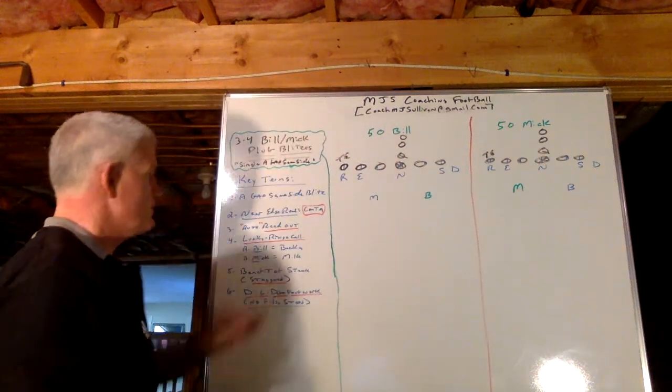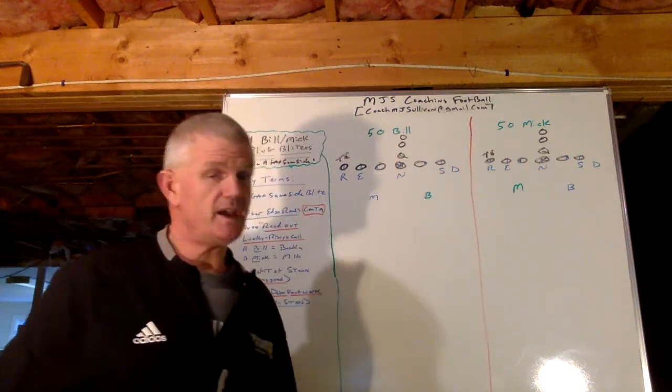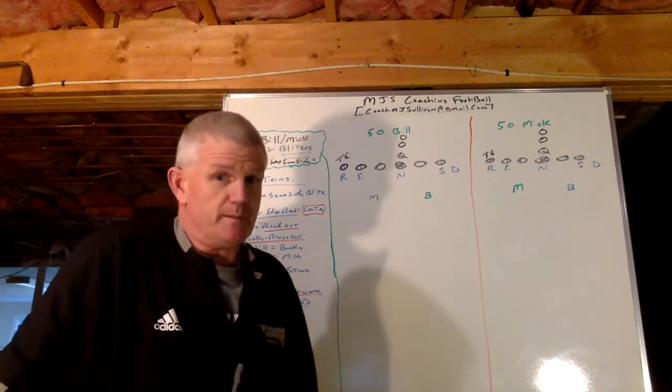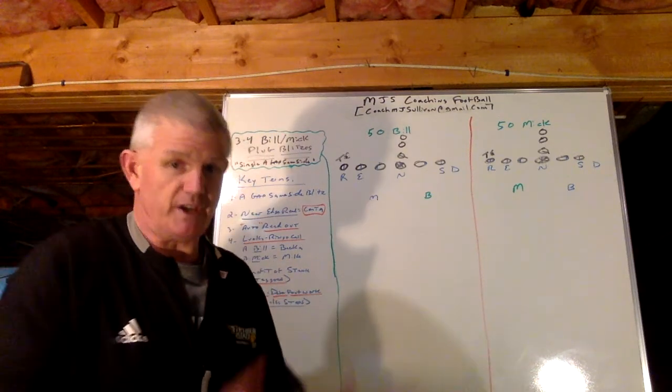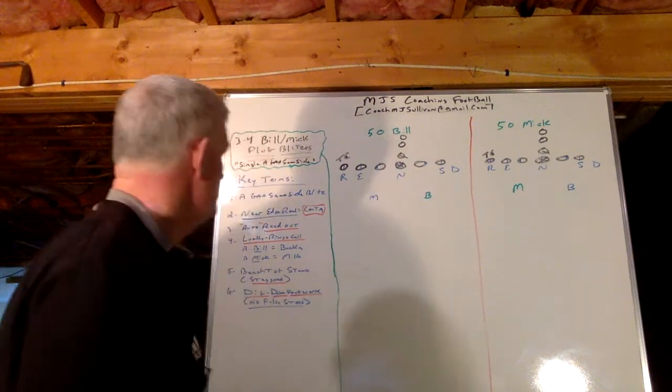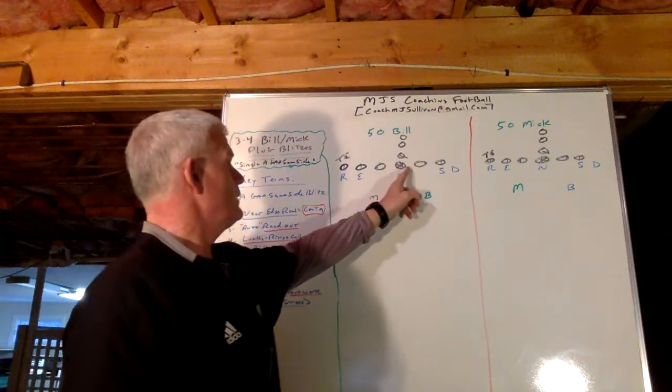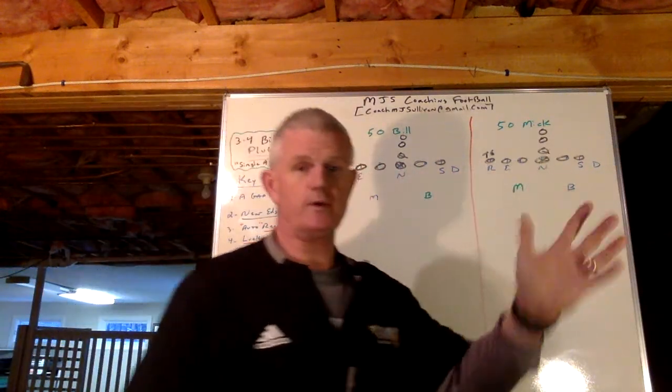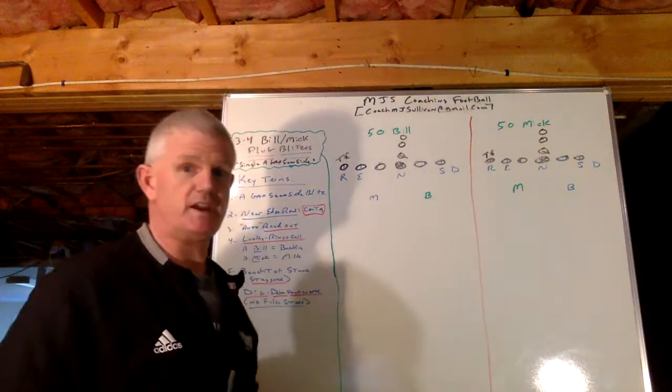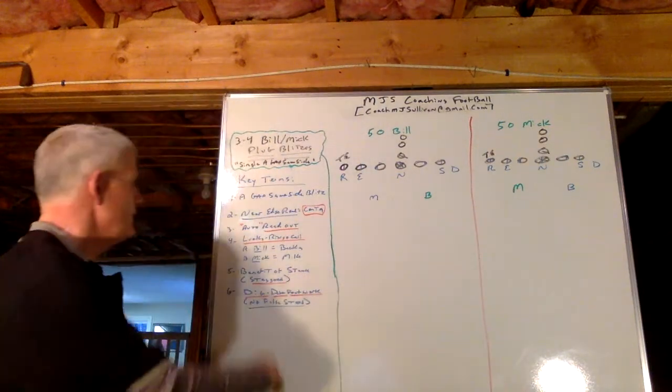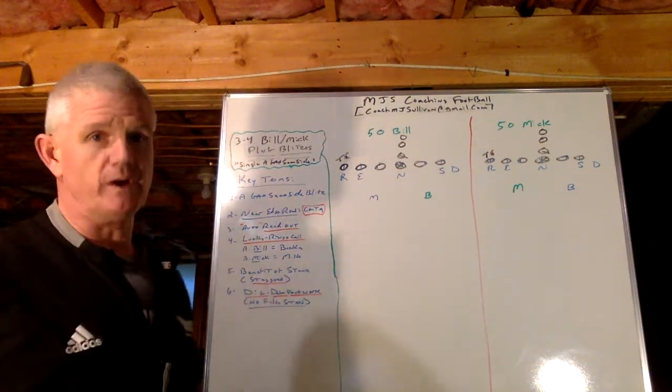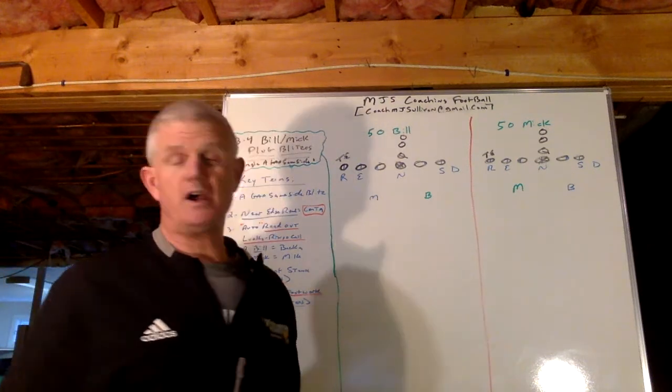You teach them the near edge, and this time, anytime it's an A-gap on your side, anytime it's an A-gap blitz, even if it's opposite side, it's the center. So, near edge read of the center. Okay, we're going to show it to you, and what their reaction should be based on that near edge. It's an auto-read-out.